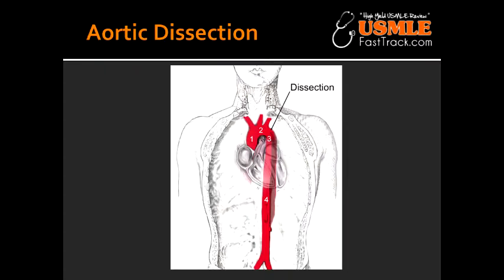What are some of the eventual consequences of aortic dissection? Aortic dissection can lead to pericardial tamponade, aortic rupture, and death.